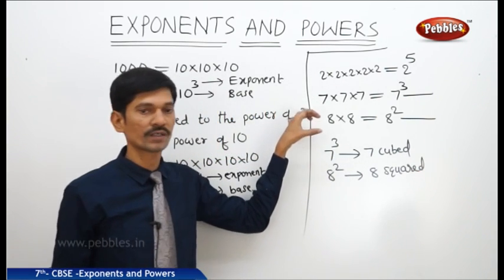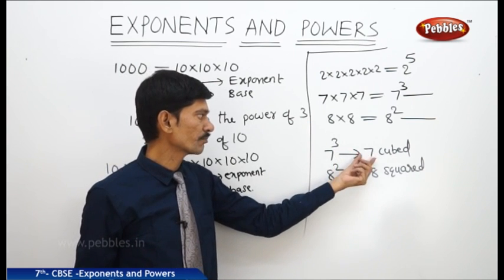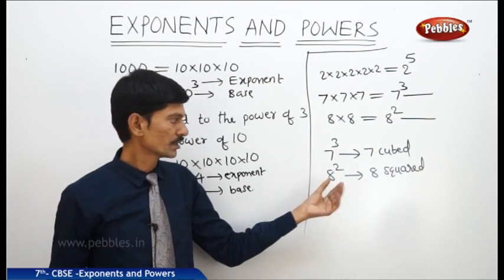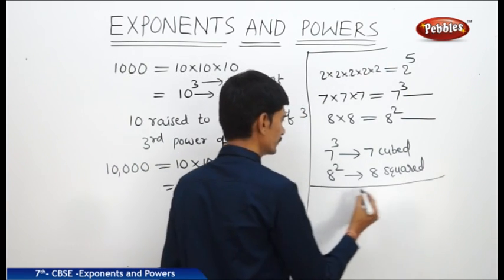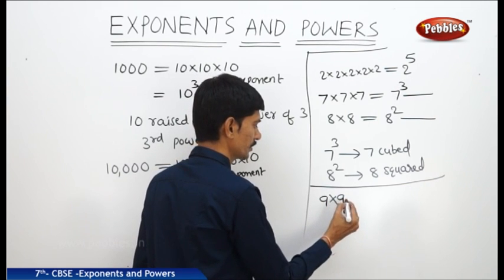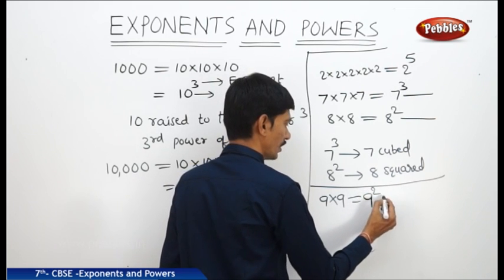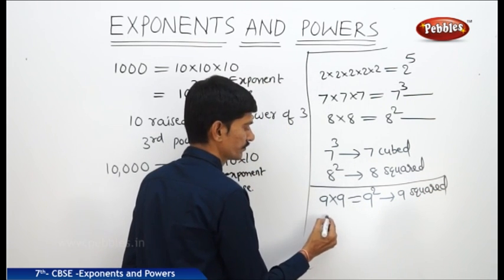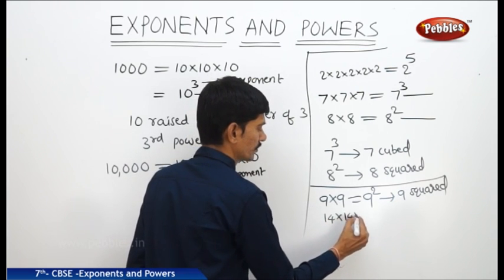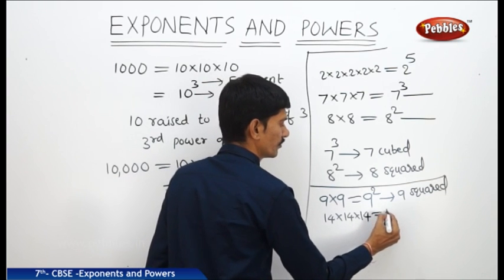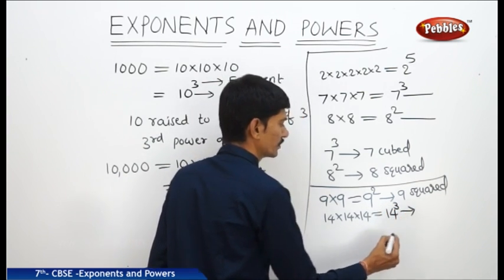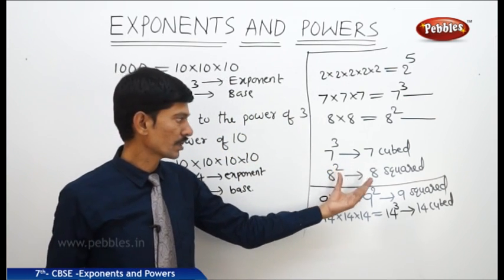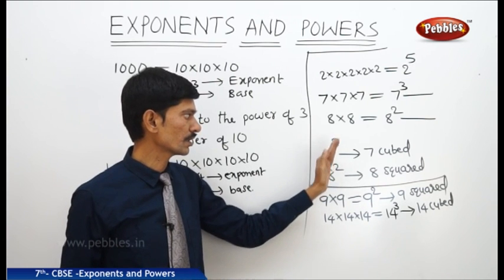So, if any base has the exponent 3, we say that number is cubed. If any number has the exponent 2, we say that number is squared. For example, 9 × 9 equals 9 to the power of 2, also read as '9 squared.' And if 14 is multiplied 3 times, we write 14 to the power of 3, also read as '14 cubed.' When the exponent is 2, the other name is 'squared'; when the exponent is 3, the other name is 'cubed.'